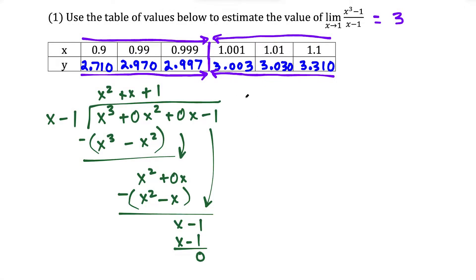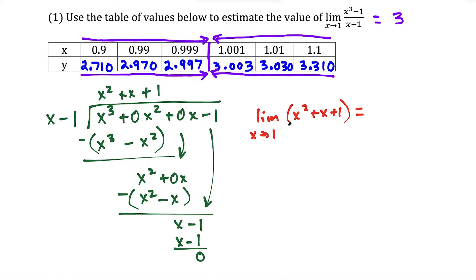One more thing before we move on — we could divide these polynomials and it gives us x squared plus x plus 1, then find the limit as x approaches 1 of x squared plus x plus 1. We evaluate this by substitution: plug in 1 squared plus 1 plus 1, which simplifies to 3. That matches the limit we found by estimating with the table.